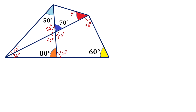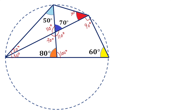So for that, we need some properties. We know one property that an angle inscribed in a semi-circle is a right angle. And the converse of this property is also true. So whenever you see a right angle, you can always show that that right angle triangle can be inscribed in a semi-circle like this.